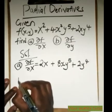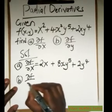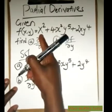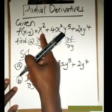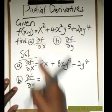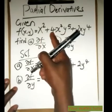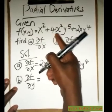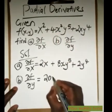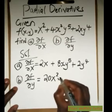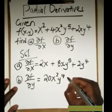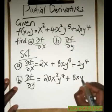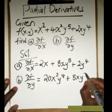Now we come to part b — differentiating with respect to y. Here there is no y, so this is a constant; the derivative of a constant is 0, so it does not appear. We come to this term: the power on y multiplies the coefficient, we get 20x squared, then reduce the power on y by 1. Plus this multiplied by that, we get 8x, then reduce the power on y by 1, giving us 3.